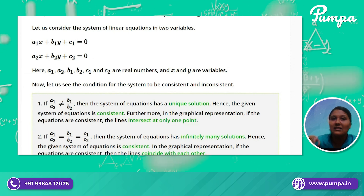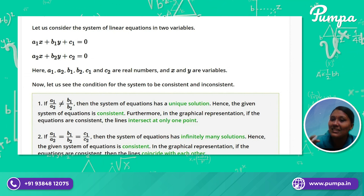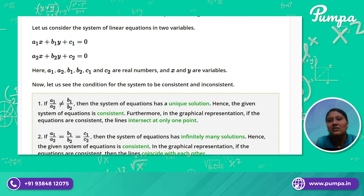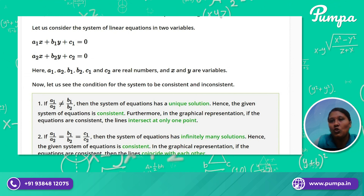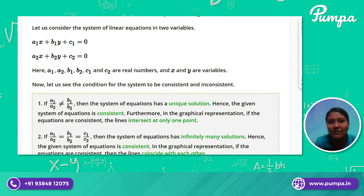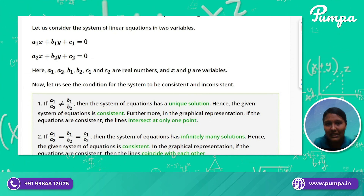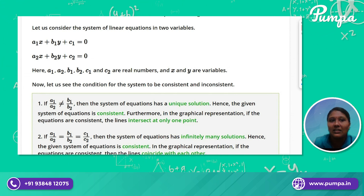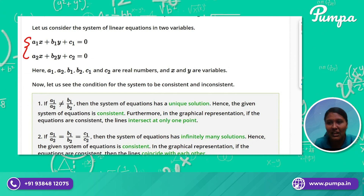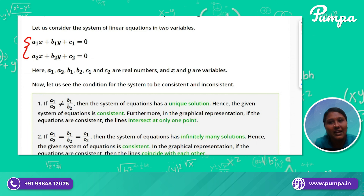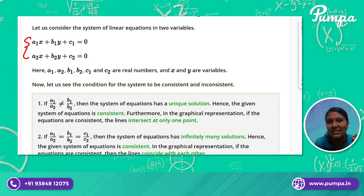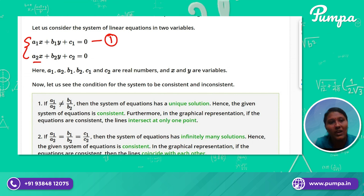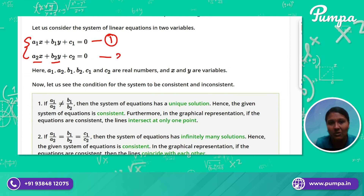What we are going to check is the standard format. The existence of a solution is the type of solution to the set. The standard formula for the first equation is: a1x plus b1y plus c1 is equal to 0. The second equation is: a2x plus b2y plus c2 is equal to 0.